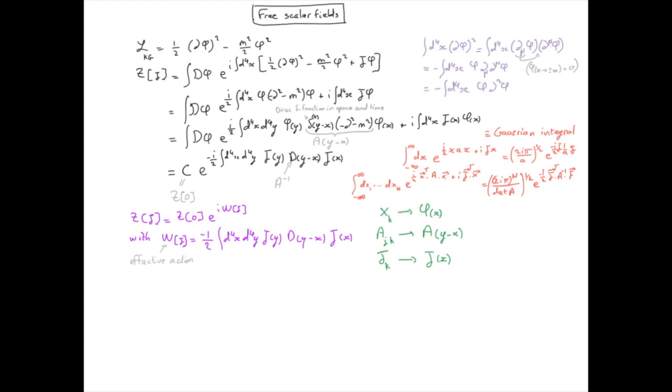But we are not done yet because we still need to specify what is D. This is called a propagator. Indeed, we can see this equation as I have a source which induces a perturbation of the field in spacetime position x. This perturbation is then propagated from x to y by the propagator. So the way I define the propagator is as the inverse of the operator A.